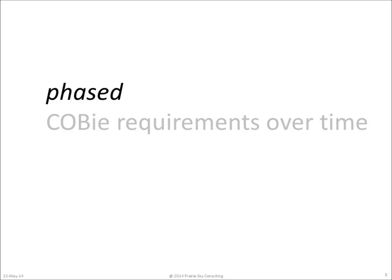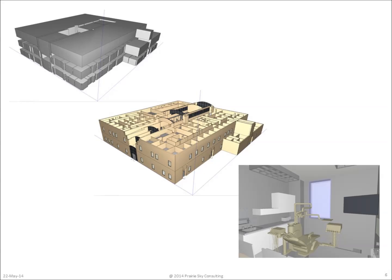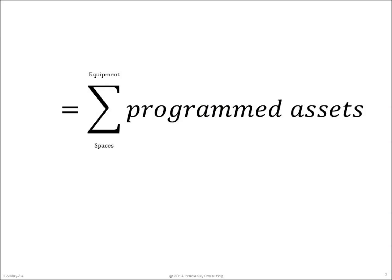When thinking about how COBE data is developed, it's important to realize that COBE data doesn't happen all at once. COBE requirements are phased in over the life of a project. During project planning, we get the blocking and stacking of the spaces within the building. During design, we get information about the rooms and fixtures. During construction documents, we get information about the specific details of the products that are going to be delivered, and then during construction, installed. So during planning, we can identify COBE requirements as being the sum of all of the programmed assets.